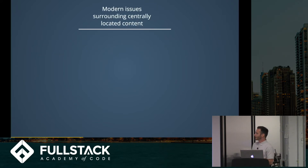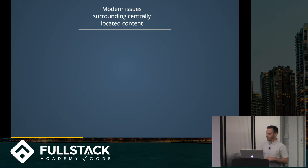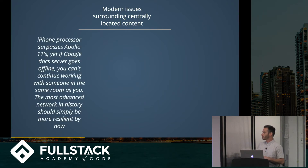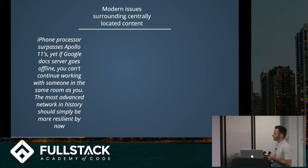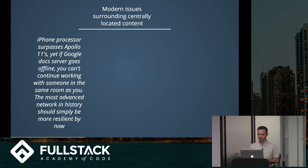Modern issues surrounding centrally located content. Just a couple of brief examples of why centrally located content poses problems: your iPhone processor surpasses Apollo 11's, yet if Google Docs' server goes offline, you can't continue working with someone in the same room as you. The most advanced network in history should simply be more resilient by now.